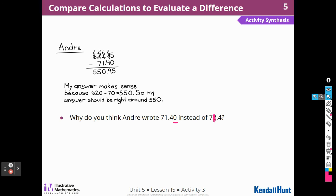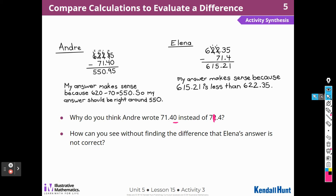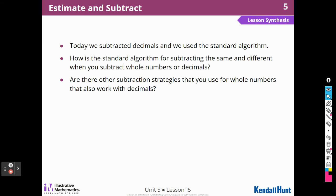Sorry about that interruption, boys and girls. Okay, so what is our next answer? How can you see without finding the difference that Alina's answer is not correct? I can see that because 622 minus 70, or even 620 minus 70 is a lot less than 615, isn't it? All right, so let's move on to our cool down.